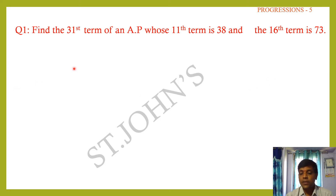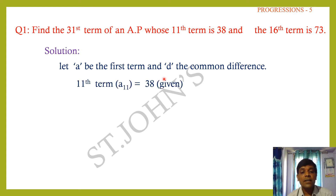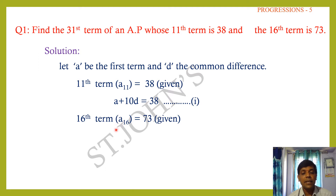Solution: Let a be the first term and d the common difference. The 11th term in AP: a₁₁ = 38, so a + 10d = 38. The 16th term in AP: a₁₆ = 73.